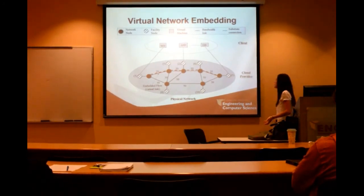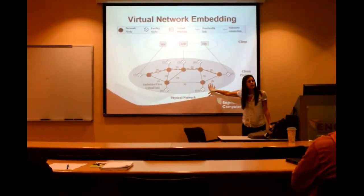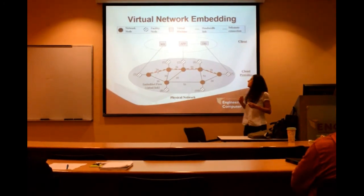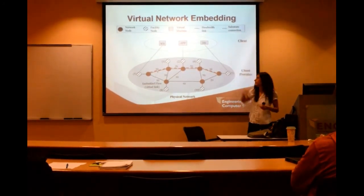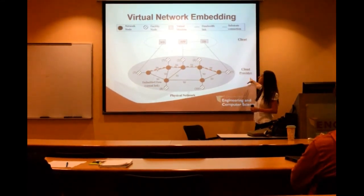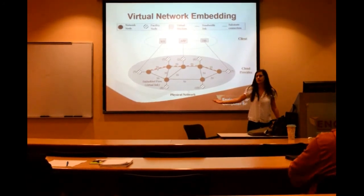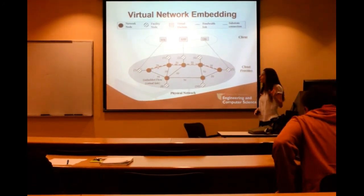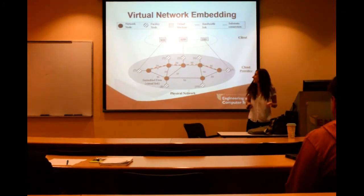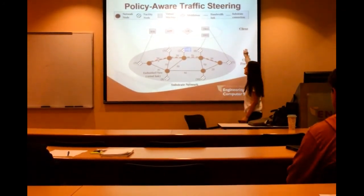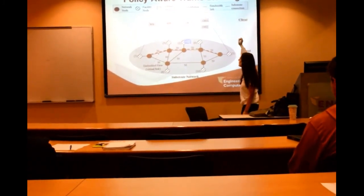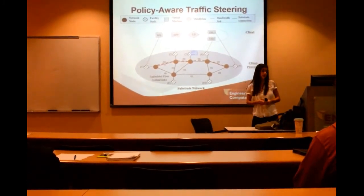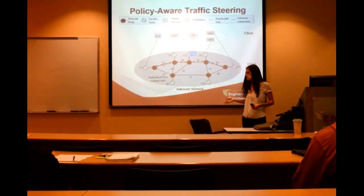Now that you have your physical network — your cloud data center network — clients would be running on top of it, and each client would be represented as a virtual network. That's a typical three-tier application. The problem for the cloud provider is that he or she needs to decide where to place that application in their network, as there are many different possibilities. That's called the virtual network placement problem. Now, let's add another factor: a load balancer, which is one type of middlebox. You also have firewalls, intrusion protection systems, antiviruses, and many others.